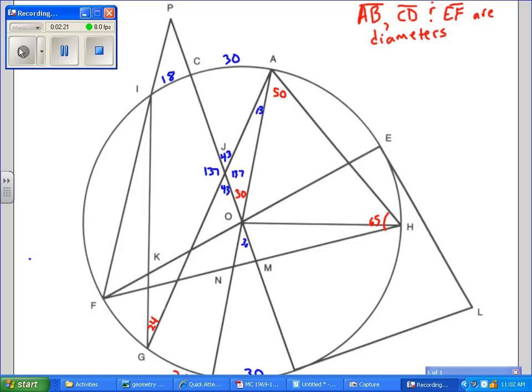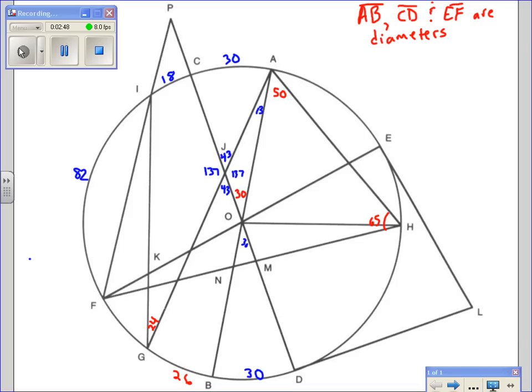I know this inscribed angle at AHF is 65, and the arc would be double that which would be 130. Well, the arc would be arc ACIF, so that whole thing would be 130. So I have 30 and 18 already, so if I take 130 minus 30 is 100, 100 minus 18 gives me a total of 82 over here for this arc.